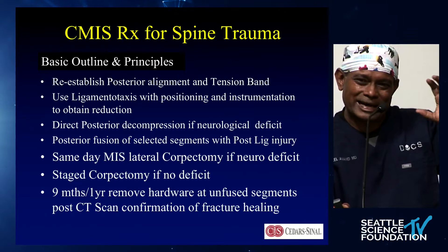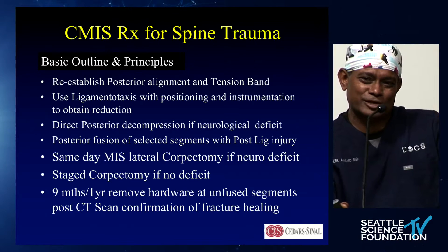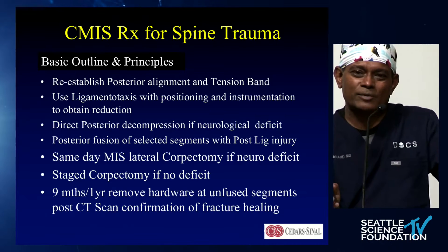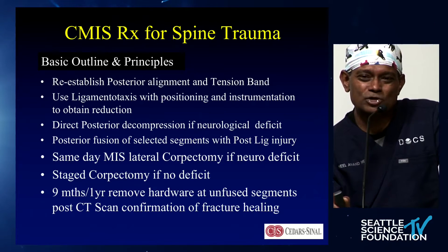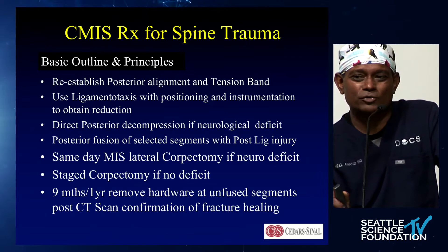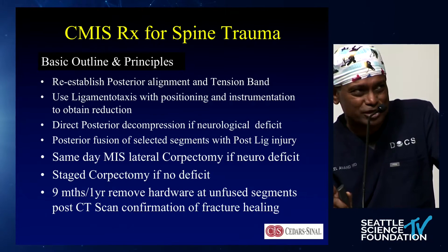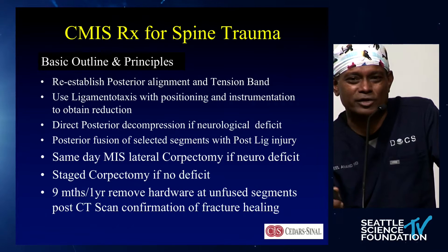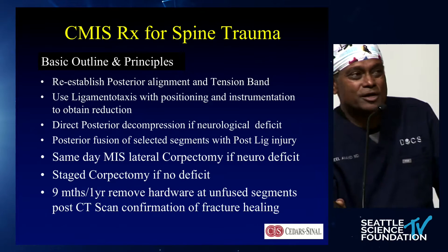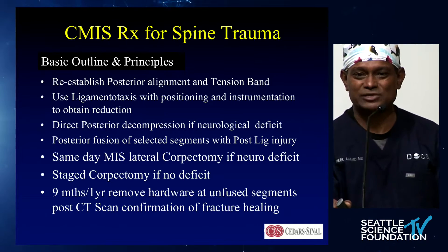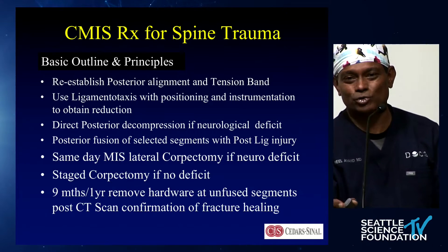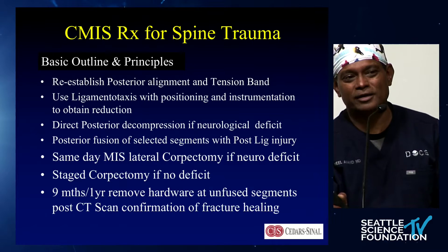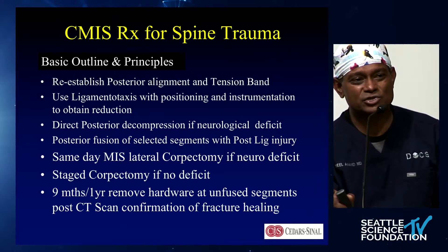This is our basic outline and principle for every single trauma. We always realign posteriorly first. Do your perc screws — quick, fast, realign. Get your alignment with indirect reduction. Most of the time you will get it. If you have a neurological deficit and there's a piece in the canal, go over and decompress it as needed. If there's still a neurological deficit with massive anterior comminution, go and do the corpectomy that same day. But now you've got posterior realignment, which makes your corpectomy so much easier.